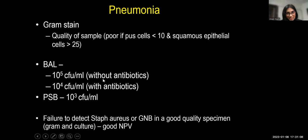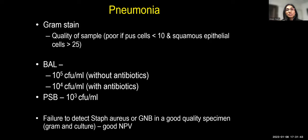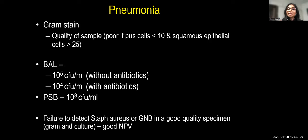For BAL, a colony count greater than 10^5 CFU without antibiotics is significant; with antibiotics, 10^4 CFU is significant. If gram stain and culture are negative for S. aureus or GNB in a good-quality specimen collected prior to antibiotics, pneumonia due to these organisms is less likely. This allows de-escalation: if gram stain shows no clusters of GPC and no MRSA/MSSA grows, vancomycin/teicoplanin can be discontinued. If gram stain is negative for GNB and the etiology appears viral, discontinuation of antibiotics can be considered.